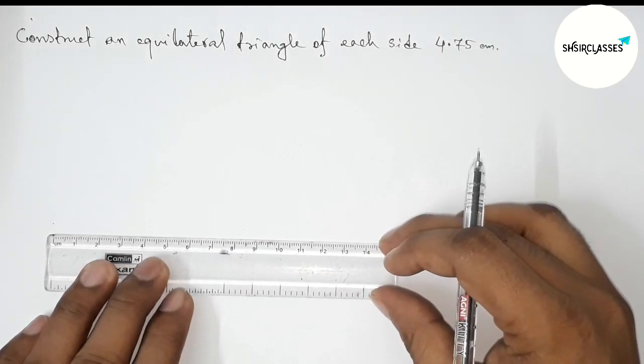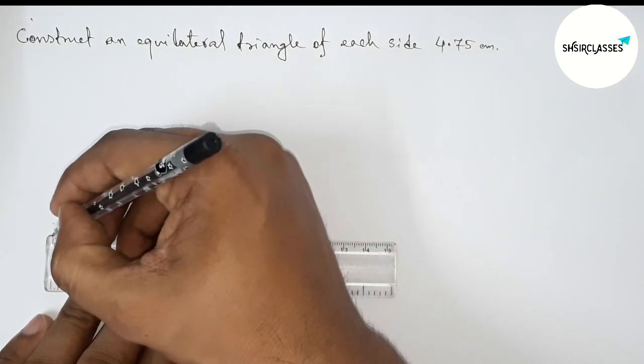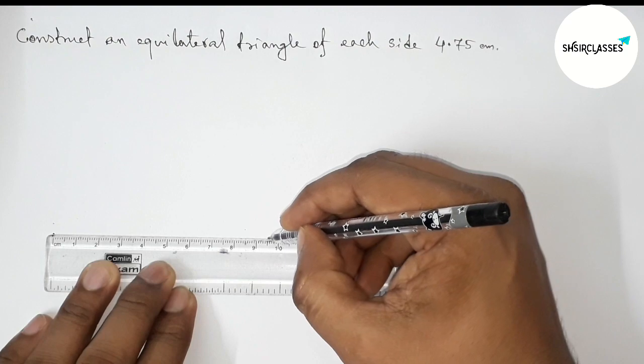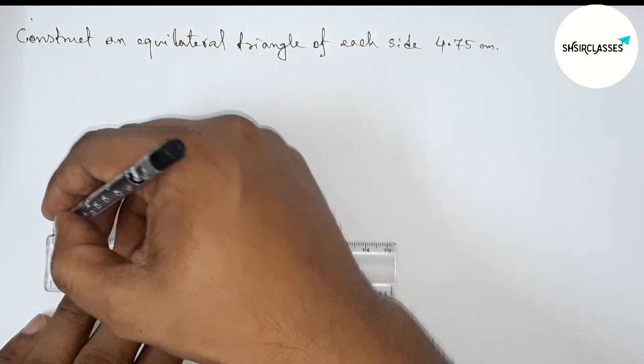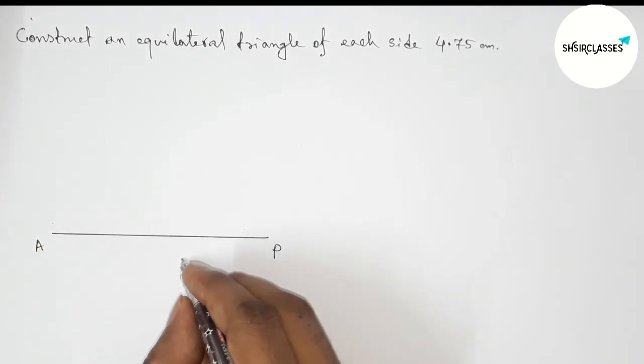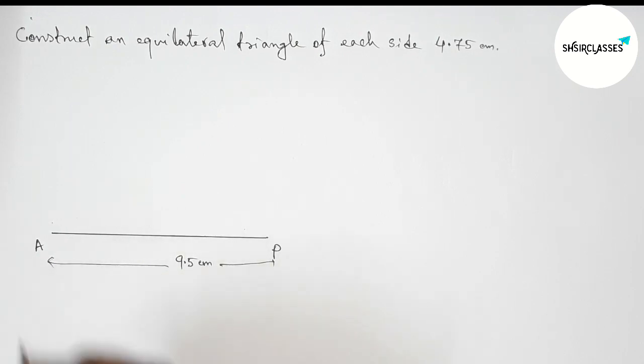First of all, let us draw here a line segment of length 9.5 centimeters. So this is a 9.5 centimeter line segment. Now taking here point A and here P, so AP is a 9.5 centimeter line segment.